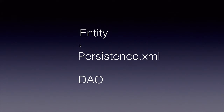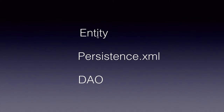An entity is a plain old Java object. It could be an order, a product, an item, a person, a student, etc. You mark this entity with JPA annotations so that you can map the object's properties or fields to database columns.